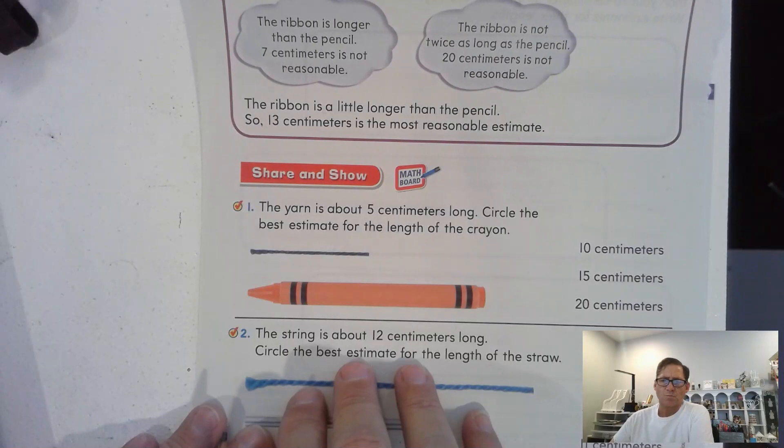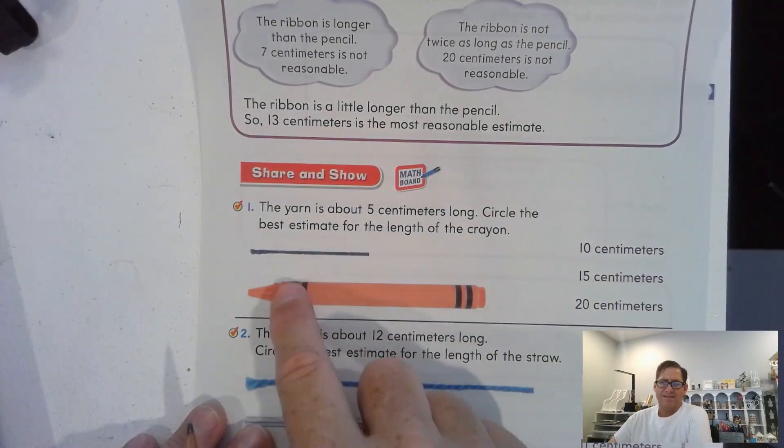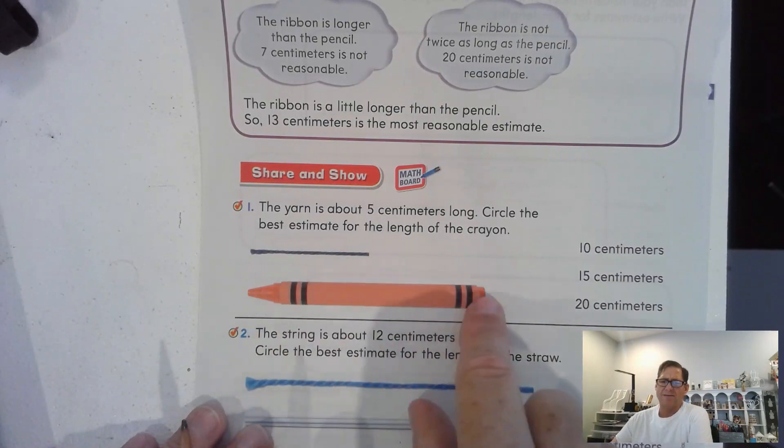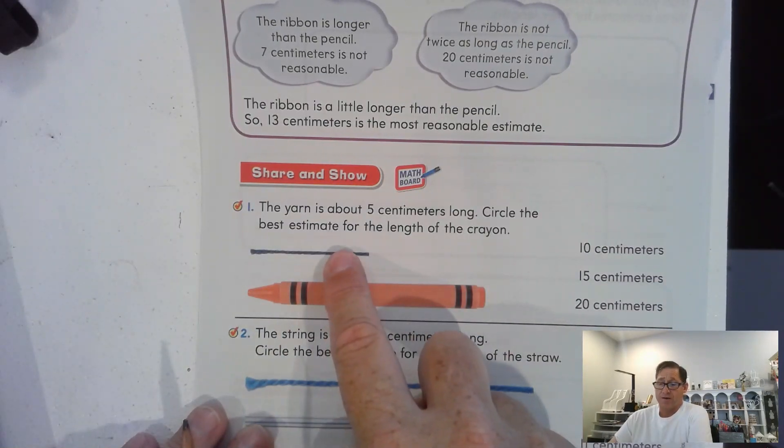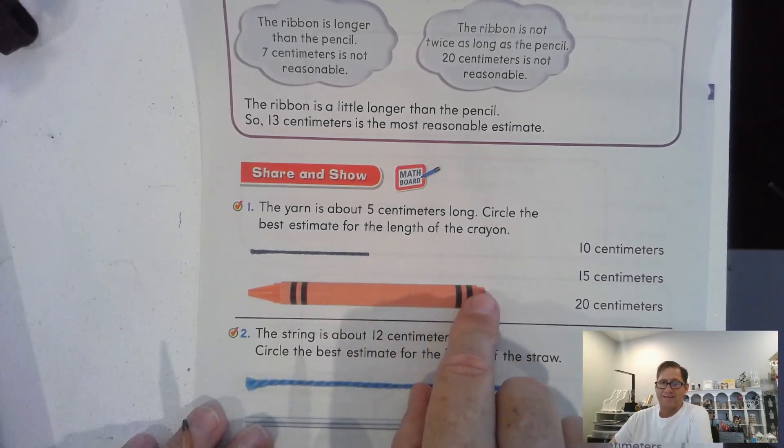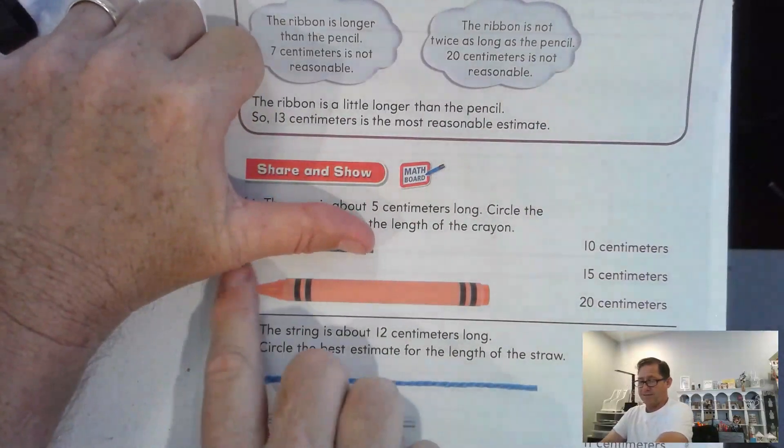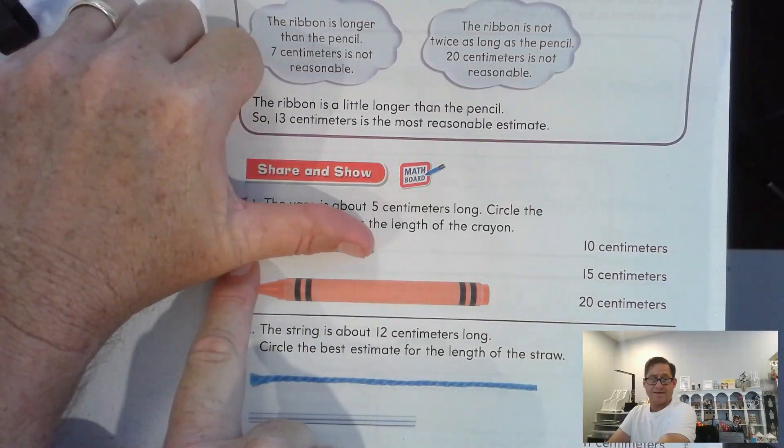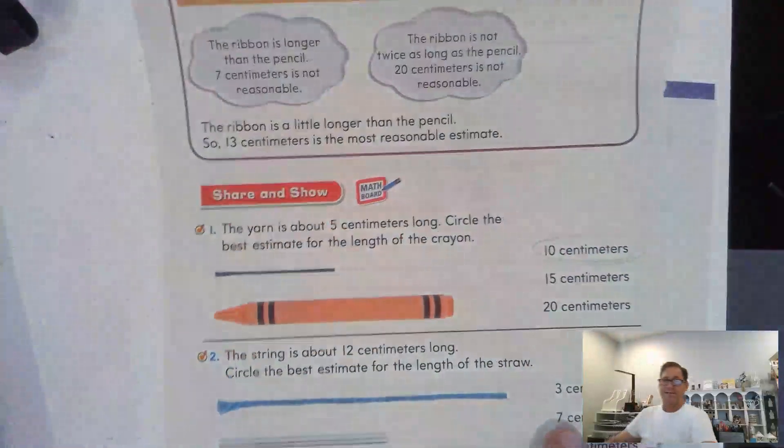Alright. So, if this is 5, is the crayon about 2 times as long as the yarn? Yeah. Probably. It's probably not 3 times as long or definitely not 4 times as long. So, for instance, if I put this here, I can guess. Move it forward. Yeah, it's about twice. I'm going to say it's about 10 centimeters.